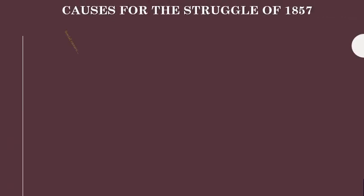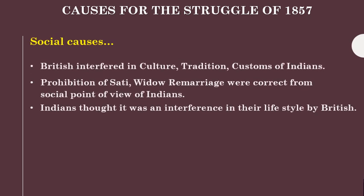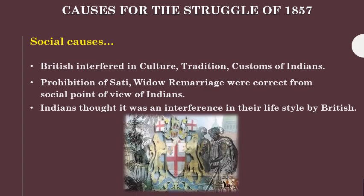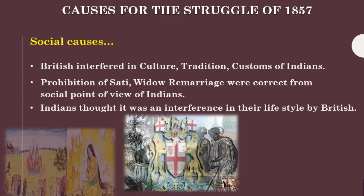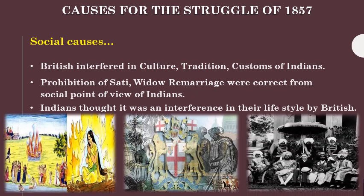Social causes: Indians felt that the British were interfering in the culture, tradition, and customs of India. The Sati Prohibition Act and Widow Remarriage Act were correct from a social point of view, but Indians thought it was interference in their lifestyle and hence they were dissatisfied.